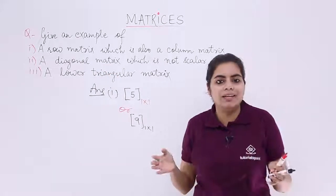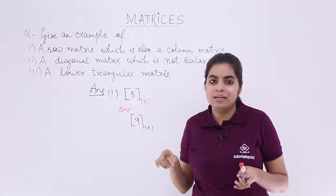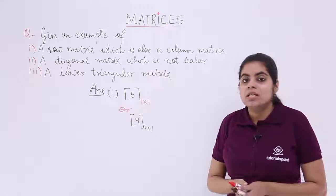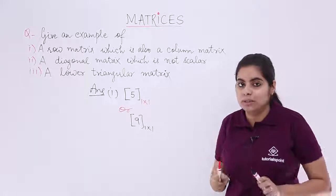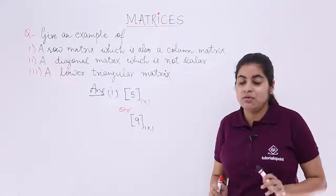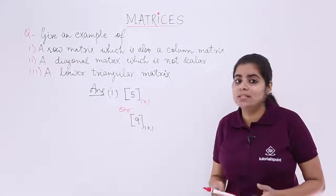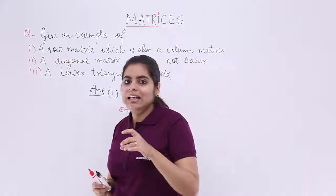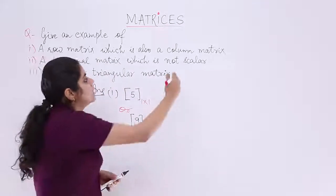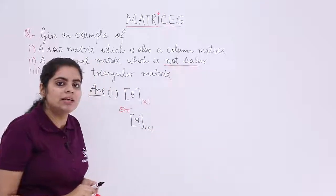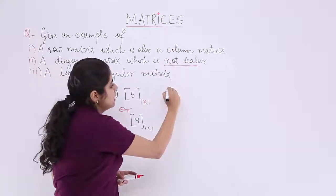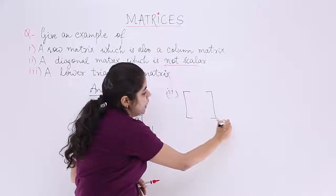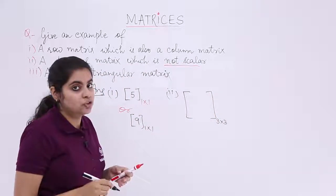A diagonal matrix has non-diagonal elements as 0 and diagonal elements as non-zero. The second part asks for a diagonal matrix which is not scalar. A scalar matrix is a type of diagonal matrix wherein all the diagonal elements are equal. But we do not need a scalar one — we need only a diagonal one. So let's quote an example. Say a diagonal matrix of order 3×3, meaning 3 rows and 3 columns.